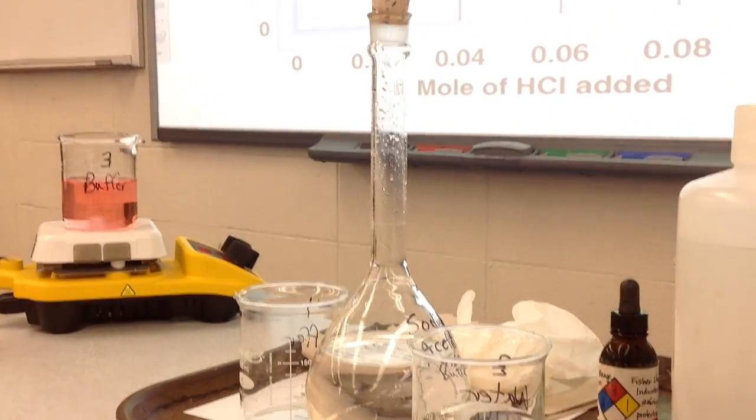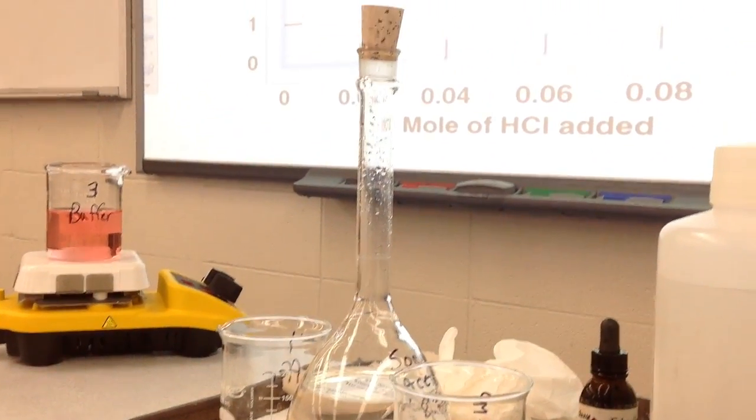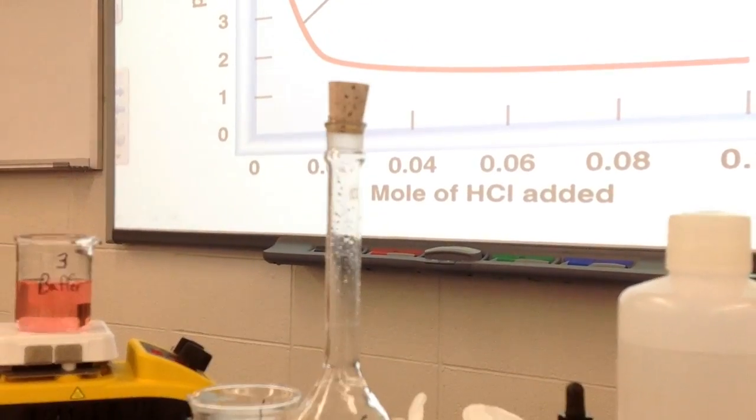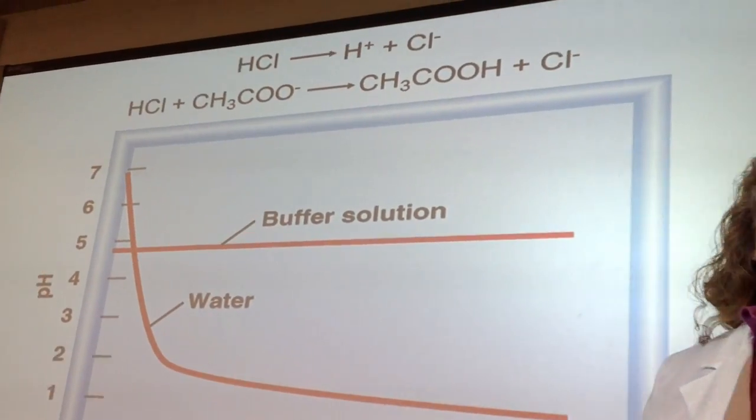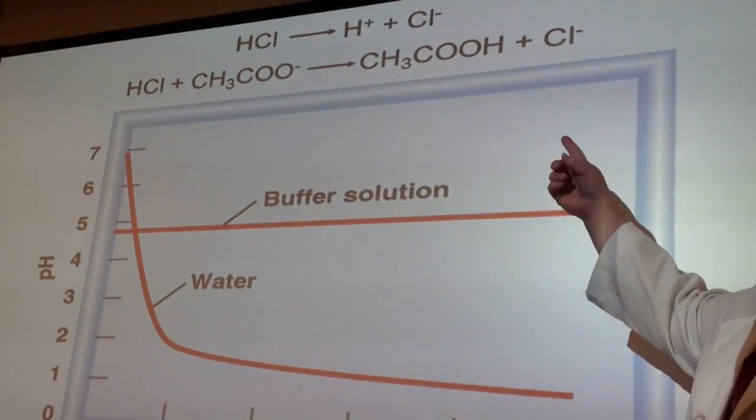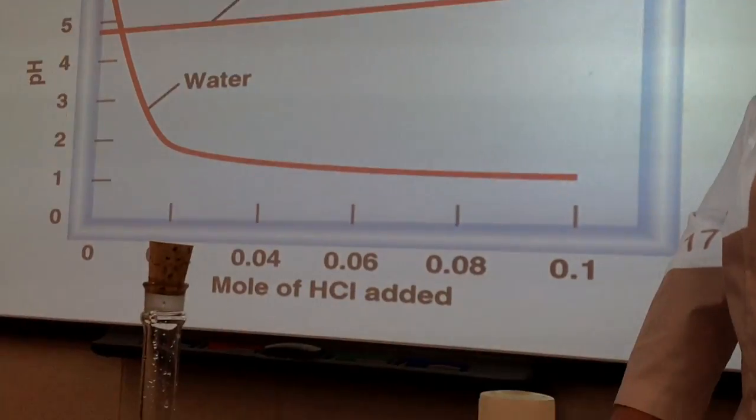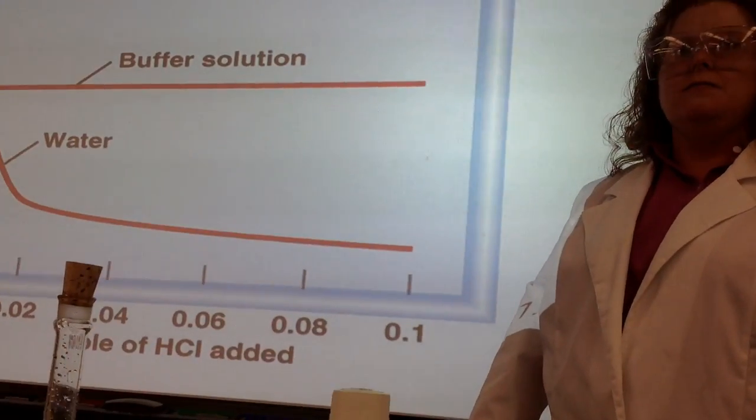When I added the HCl to the acetate buffer, the acetate ion part of the buffer removed that extra H+ that I was adding and converted it over to acetic acid. Okay, so there was relatively no change in pH.